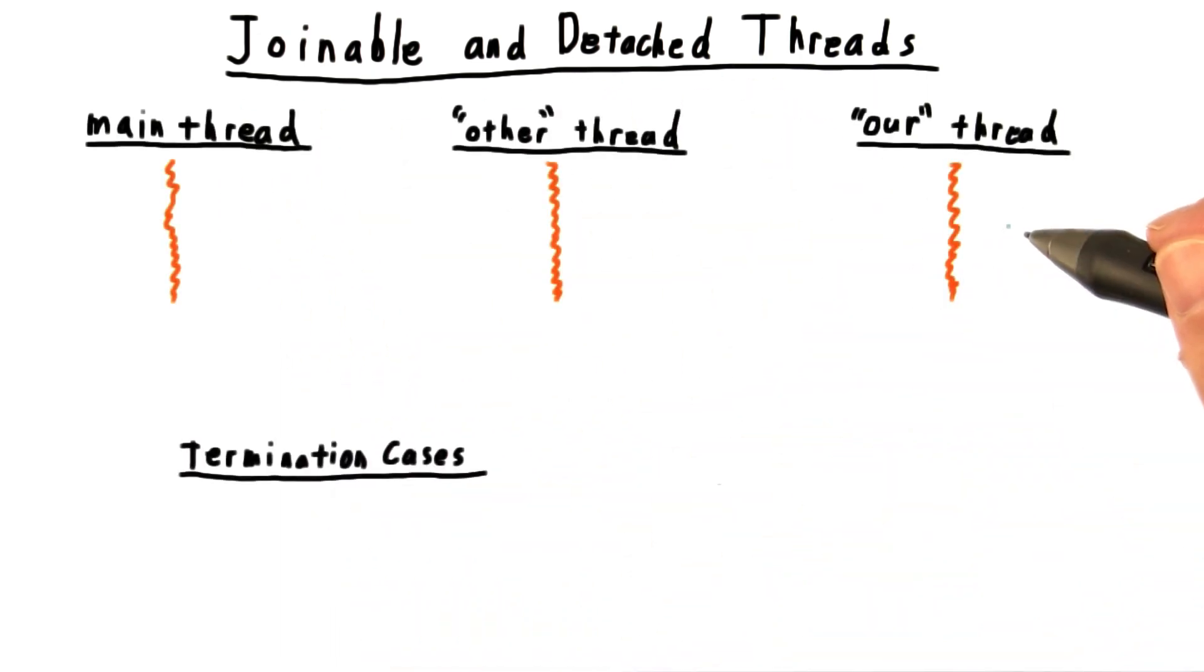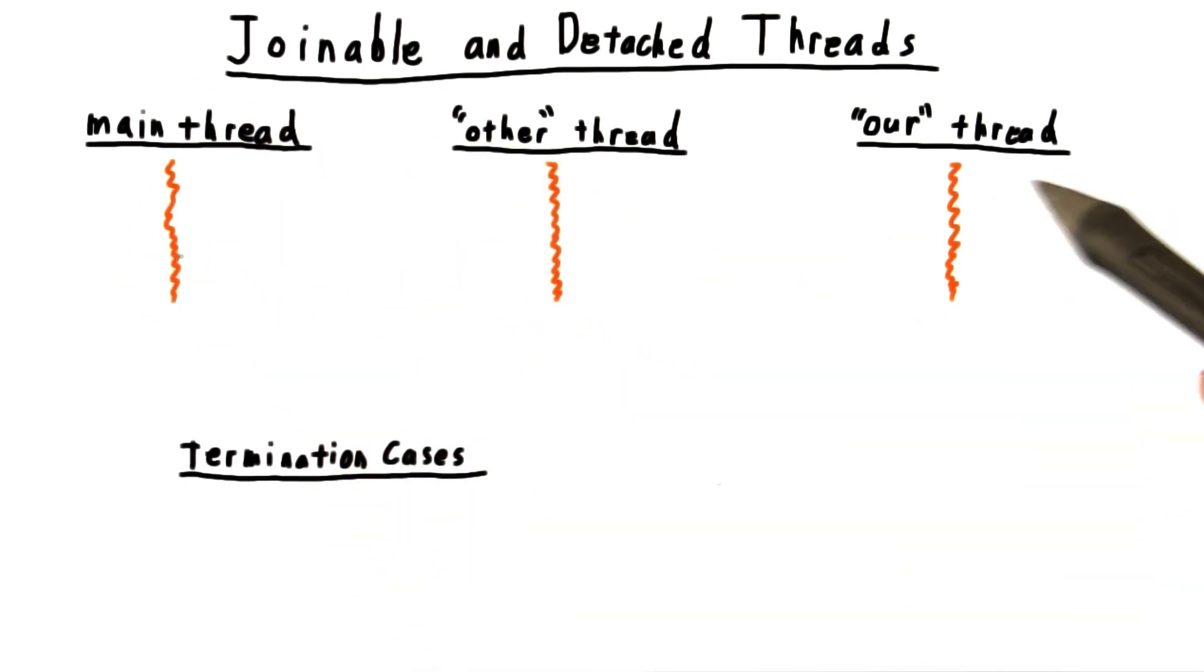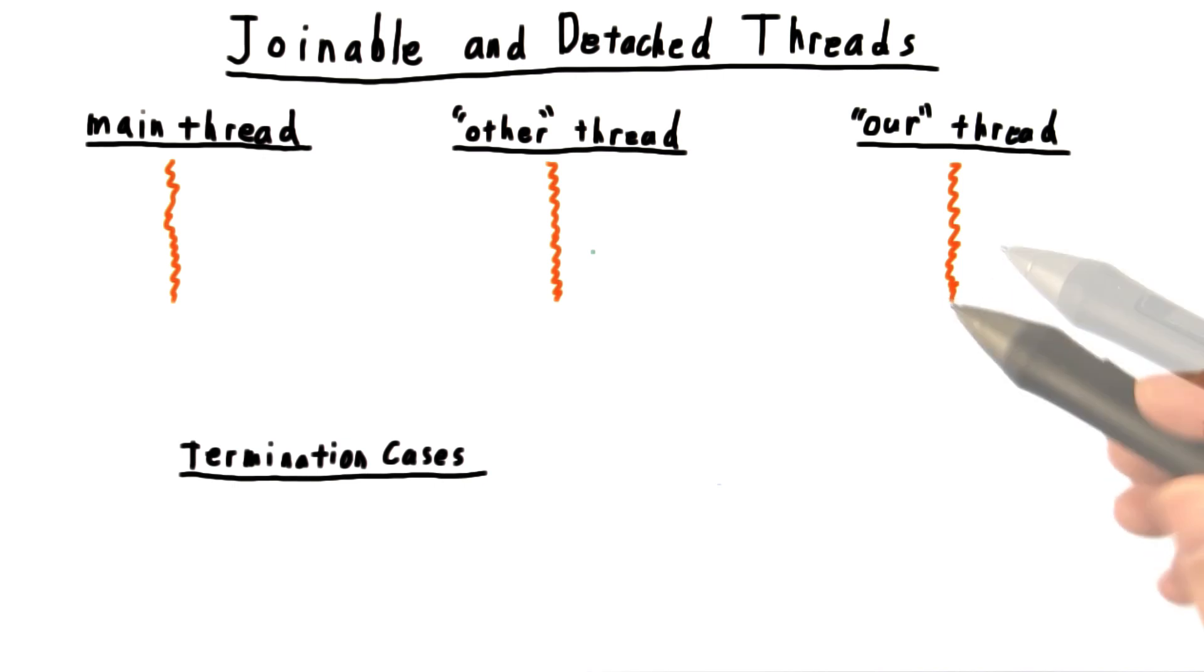Let's start by talking about what makes a thread terminate. We'll draw the main thread here on the left, our thread here on the right, and maybe there are some other threads in between. There are really two cases.